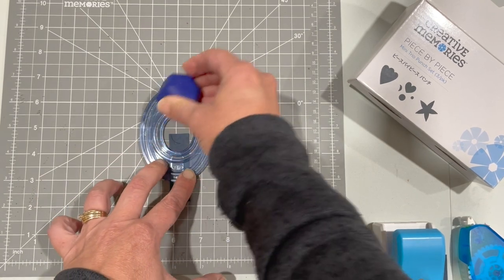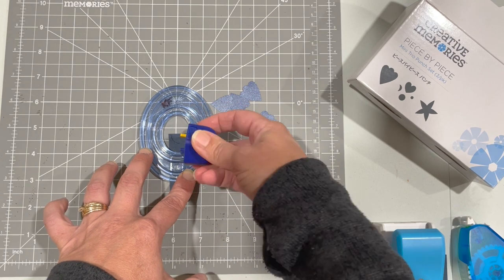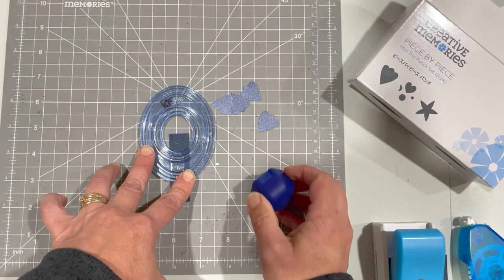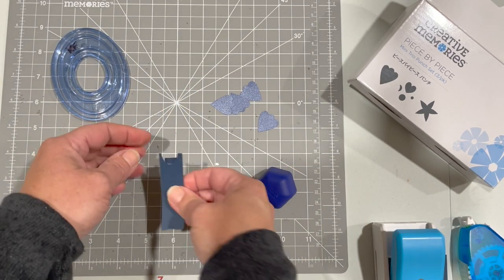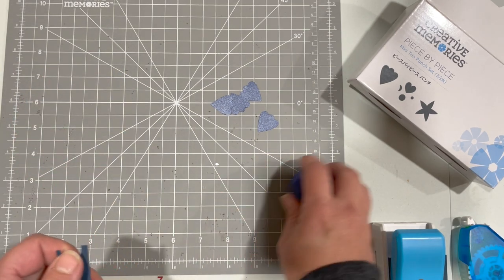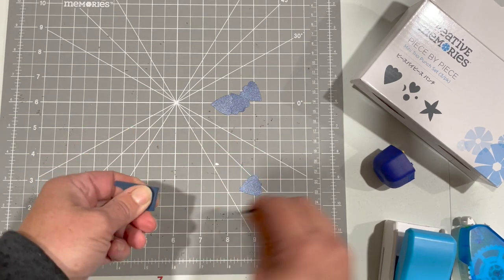And then I start again in the other just to make sure you keep it still so it doesn't move. So there's my piece for my little straps, I'm just going to give that a tear because it's going to be underneath.